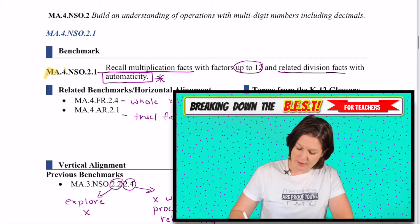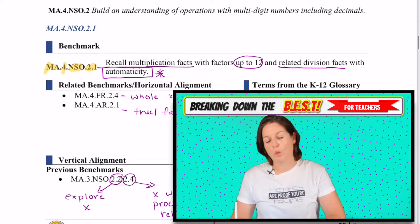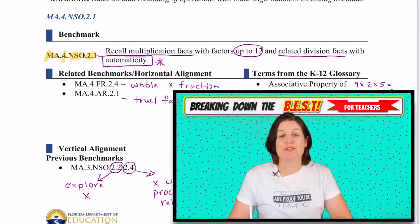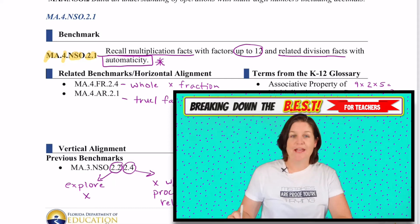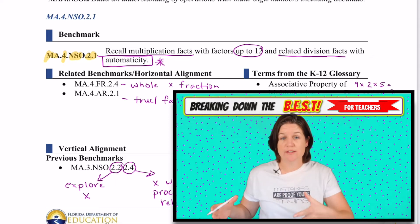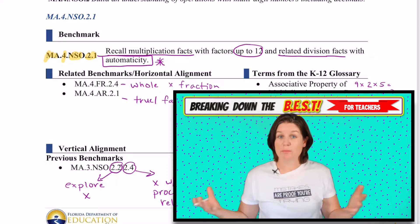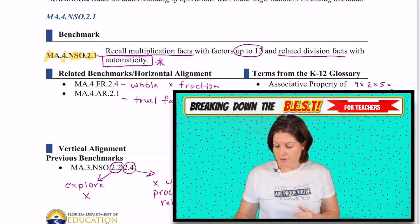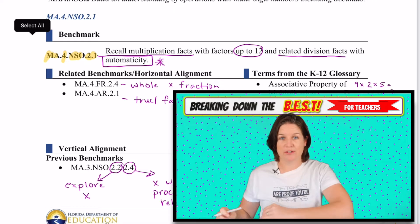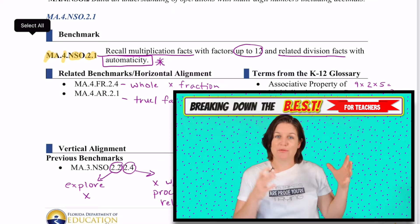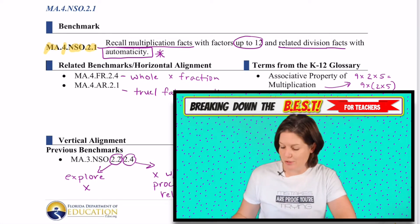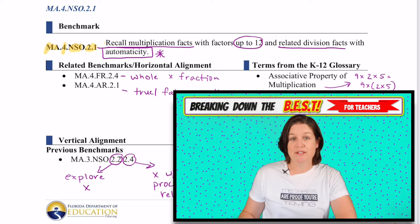It's MA.4.NSO.2.1. MA stands for math, 4 stands for fourth grade, NSO stands for Number Sense and Operations, and then we're on 2.1. This document that I'm using to break down the standard is provided to the public by the Florida Department of Education. I'm just walking you through the process I take to break apart a standard so I can create resources specifically aligned to the standards, which you have access to with your membership. But first, let's break it down.